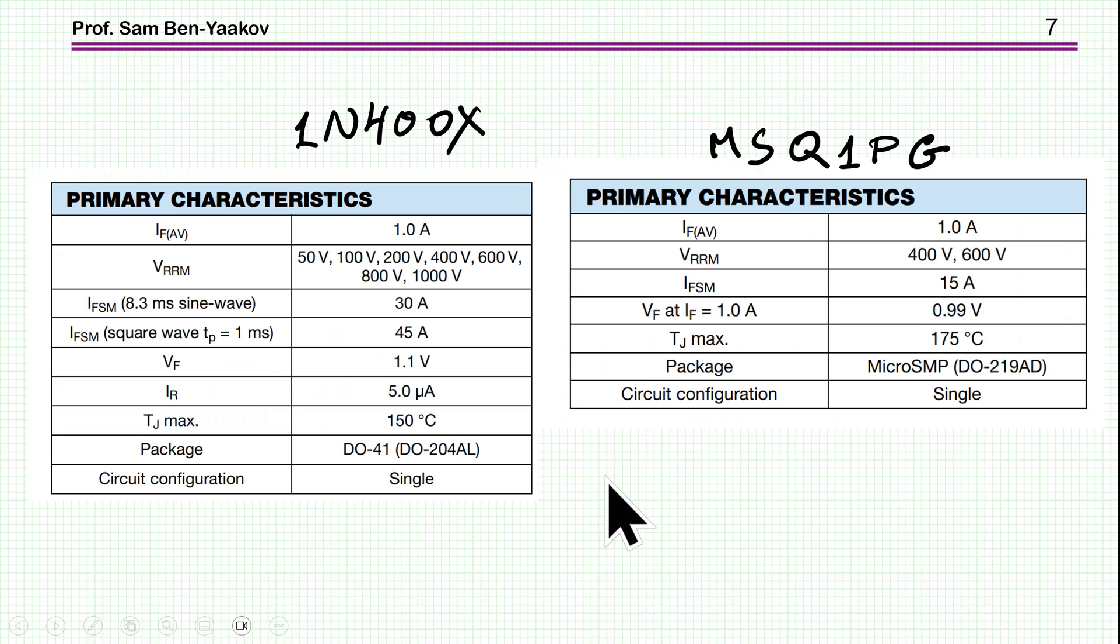As far as the forward conduction goes, it's very similar to any other diode, like the 1N4000 family. Here's the ESD-capable rectifier, it's a 1-amp rectifier. There are two versions, 400 and 600 volts. You see that the forward peak current is 15 amp, and the forward voltage is 1 volt. This is not really relevant to what we are talking about.